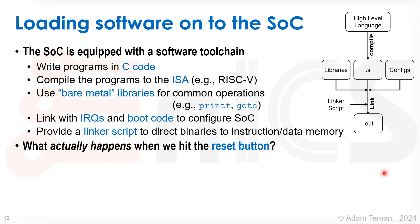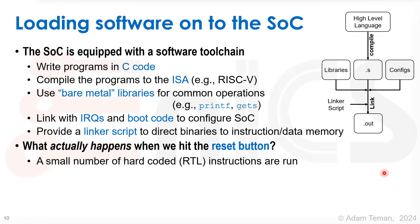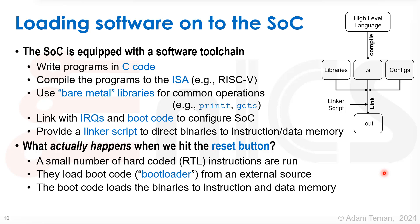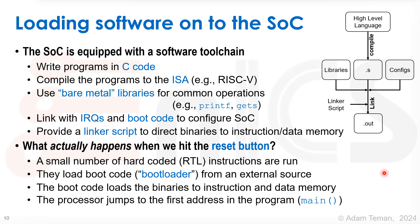Then we press the reset button. What actually happens? A small number of hard-coded RTL instructions are run. They load boot code — a bootloader from an external source. The boot code loads the binaries to instruction and data memory. Then the processor can jump to the first address in the program, which is where main is in our C program.